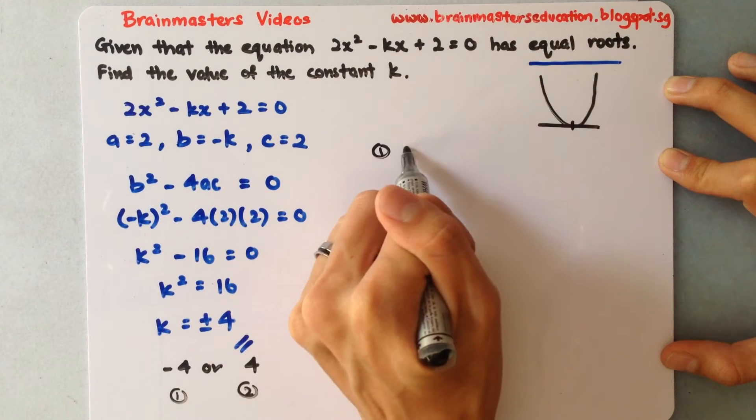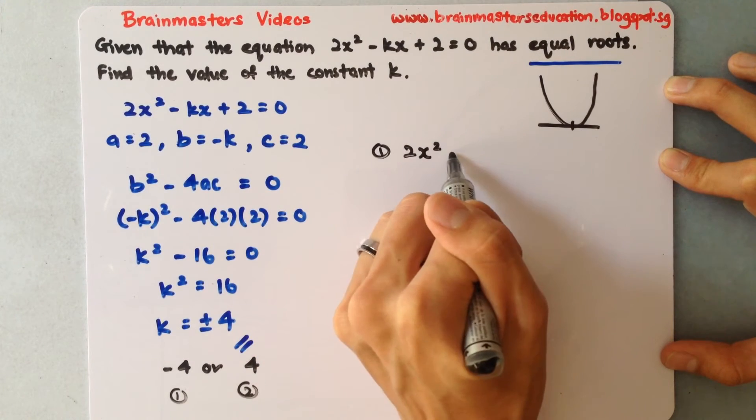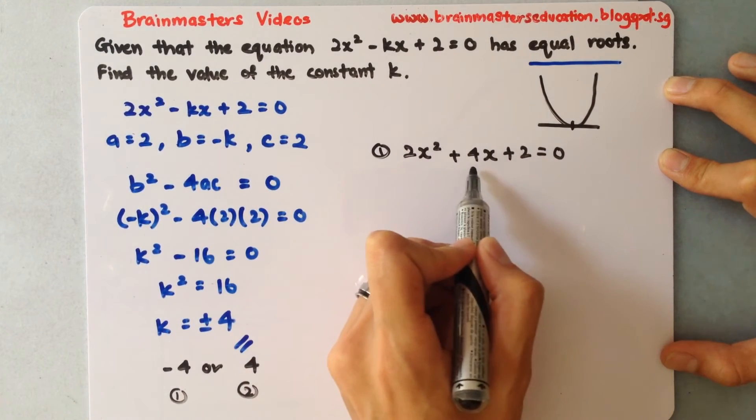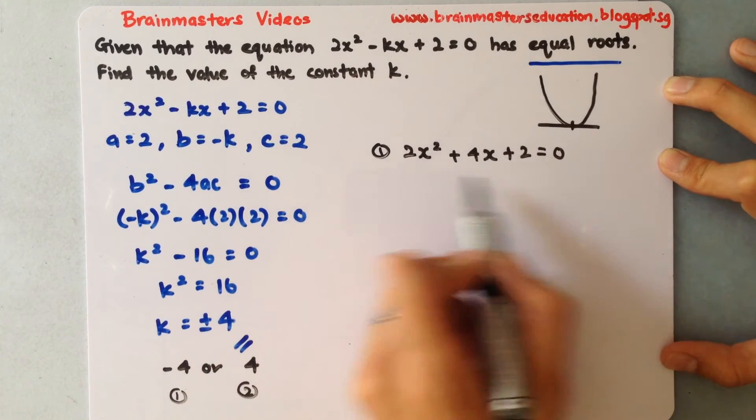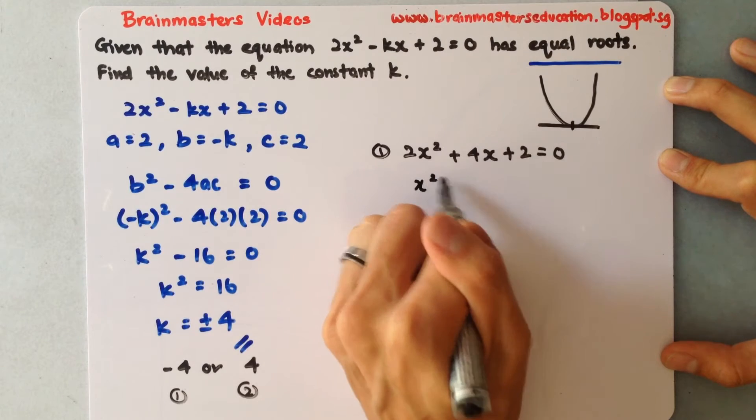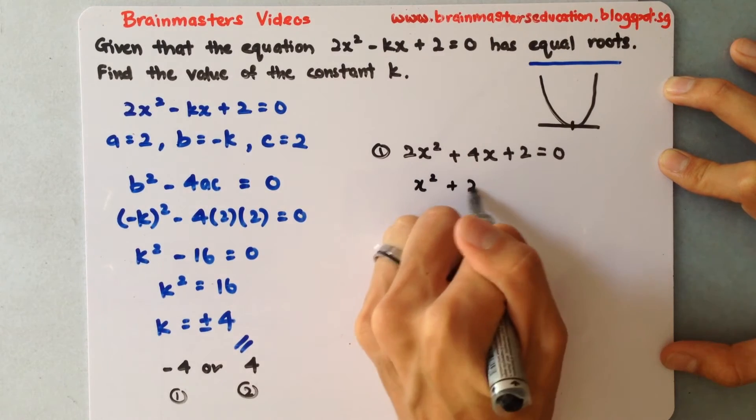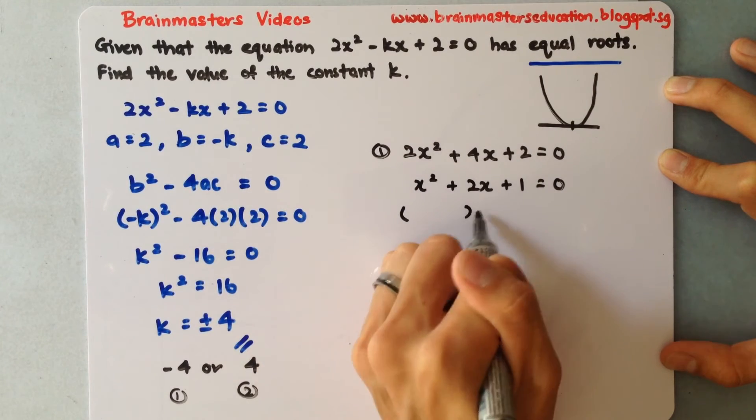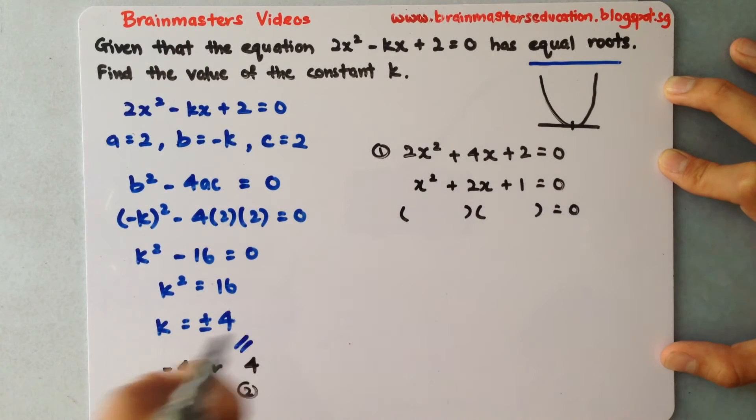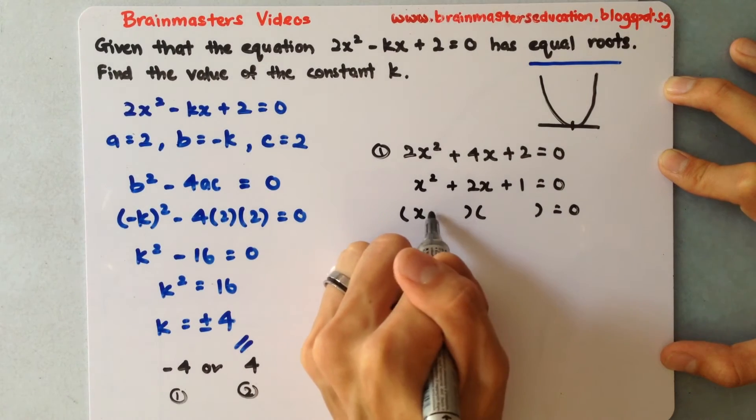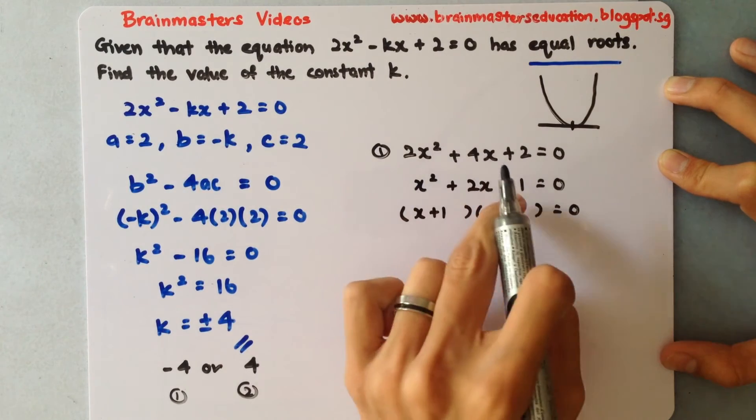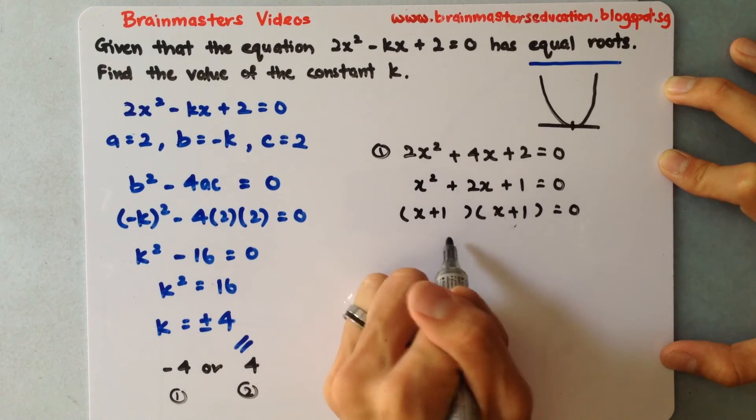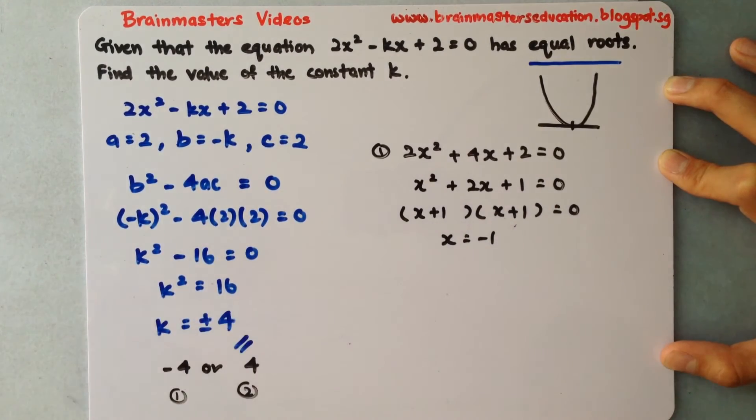For the first one, when I put it in, I'll have 2x squared plus 4x plus 2 equals 0. If k has been changed to negative 4, this is the equation. Divide throughout by 2: x squared plus 2x plus 1 equals 0. I'll do my factorizing. That will give me x plus 1, x plus 1. So over here, it will actually tell me there's a common point which is x equals negative 1.